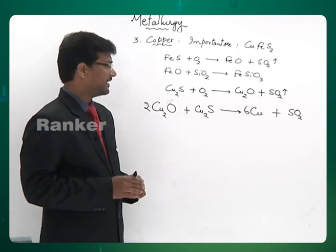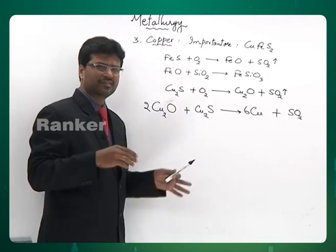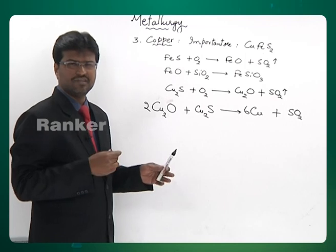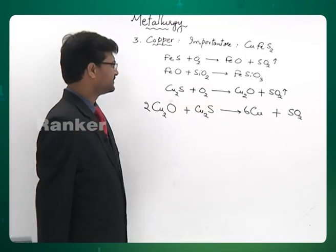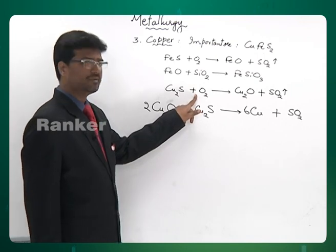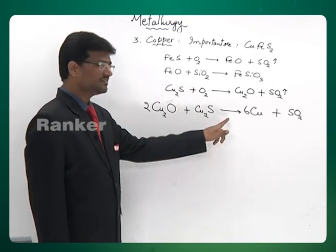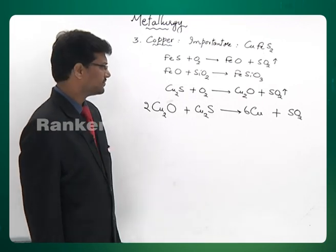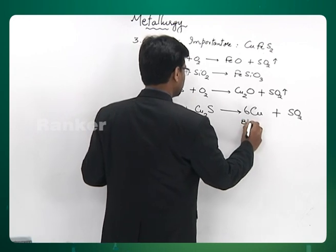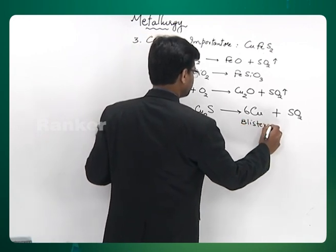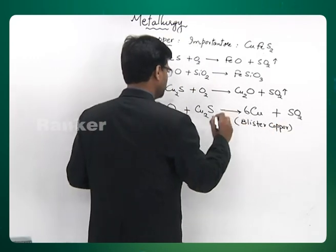It is not possible to exactly achieve this transformation, but you can analyze samples from the furnace to know when to stop passing air. This continues as long as air is being passed. At the right stage, you stop passing air and auto reduction takes place. The copper obtained at the end of Bessemerization is called blister copper.